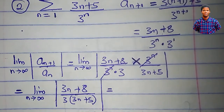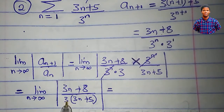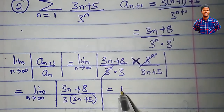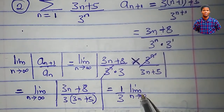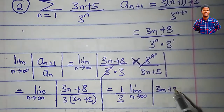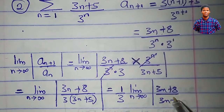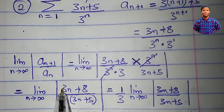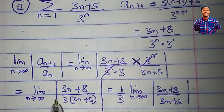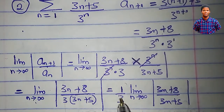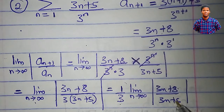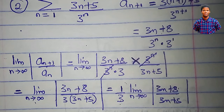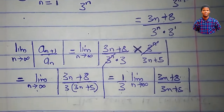We factor out 1 over 3, writing this as 1 over 3 times the limit as n approaches infinity of 3n plus 8 all over 3n plus 5. Since the highest power of n is 1, we divide the numerator and denominator by n to evaluate the limit.